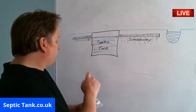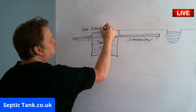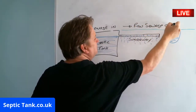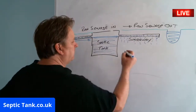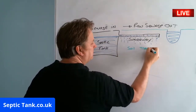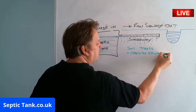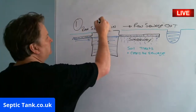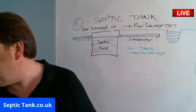The basic difference is: with a septic tank, raw sewage goes in and raw sewage goes out. The soil then treats and cleans the sewage. That's number one — the septic tank.